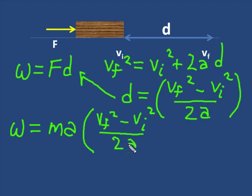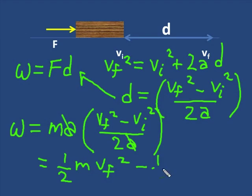Now, if I simplify this equation, I will have work in terms of the kinetic energy. The A's cancel, and what I end up with in this formula is one-half MVF squared minus one-half MVI squared, which is the change in kinetic energy.